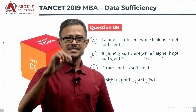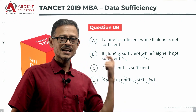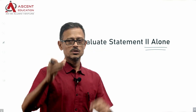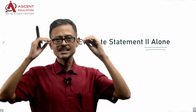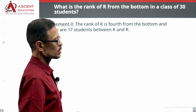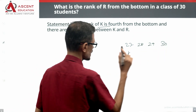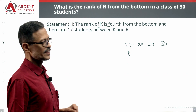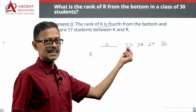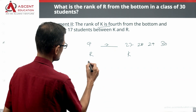Evaluating statement two alone: K is fourth from the bottom, so K's position from the bottom is rank 4 — that places K at position 27 from the top in a class of 30. There are 17 students between K and R. So R's rank from the bottom is 4 + 17 + 1 = 22. Statement two gives a unique rank of 22, so statement two alone is also sufficient.